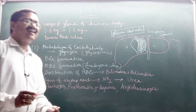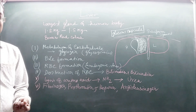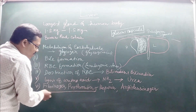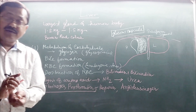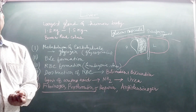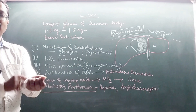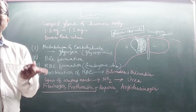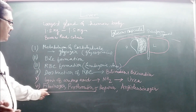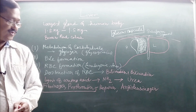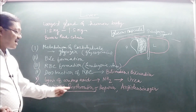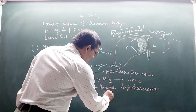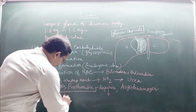Fibrinogen and prothrombin are involved in the blood clotting procedure. When a wound develops and blood leaks, these two proteins — fibrinogen and prothrombin — along with 11 other factors, coagulate the blood externally. Heparin acts as an anti-coagulant.